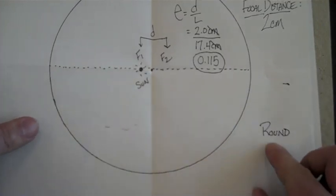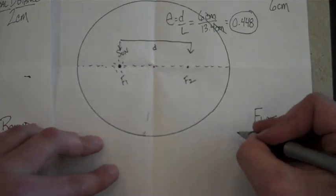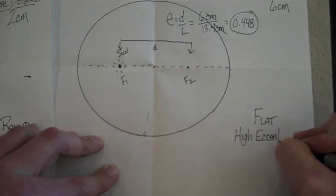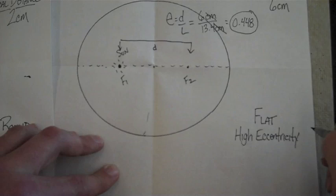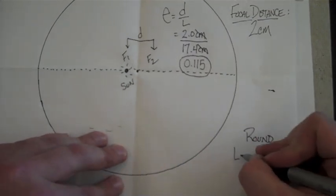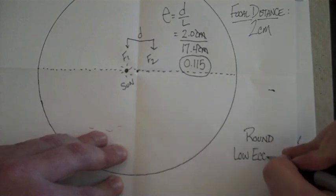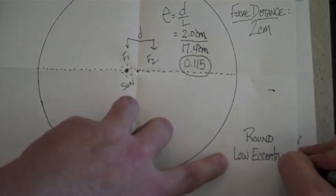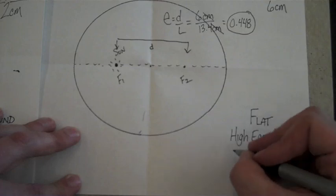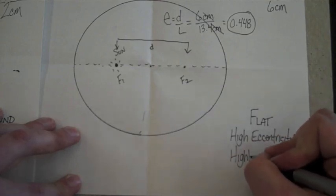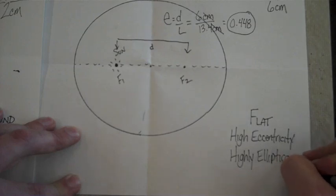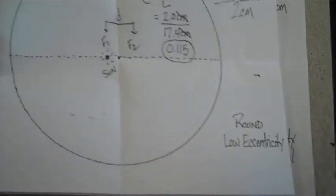When an ellipse is going to be flat, we say it has a high eccentricity. When an object is somewhat round, we say it has a low eccentricity. We say that this one, because it's flat, is highly elliptical. We say the round one is slightly elliptical.